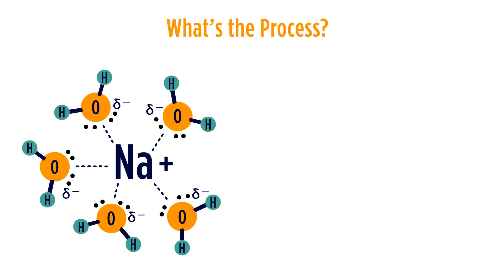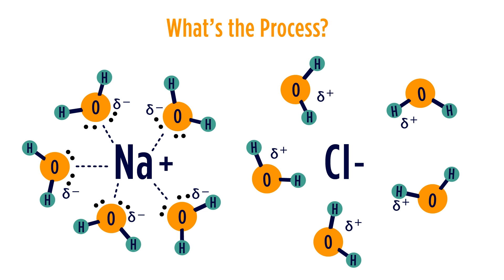A similar thing happens with the chloride, but on this side, it's going to be the partial positives that are on the hydrogens that will stabilize the chloride ion. This is the stabilization that's referred to in the definition of solvation. Here we can see the solvation of sodium chloride in water.